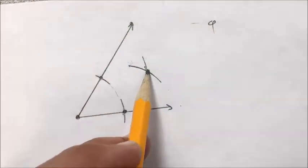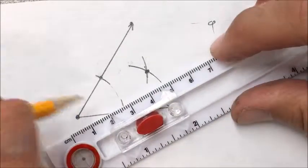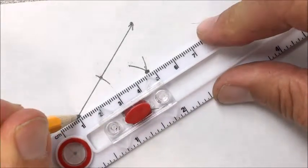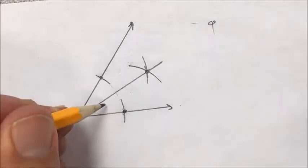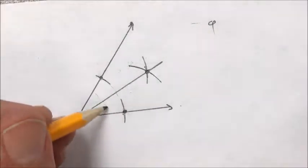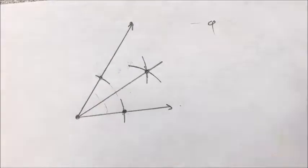And then that intersection is a point. If I connect the vertex to there, I've bisected that angle. That angle is half, and that is the other half of the whole angle.